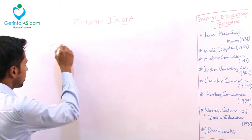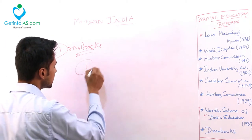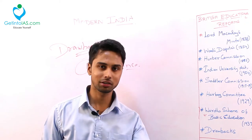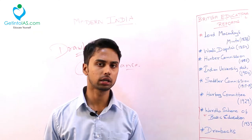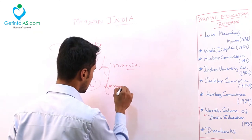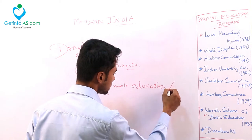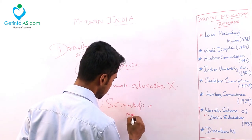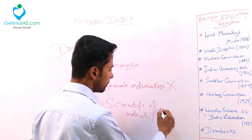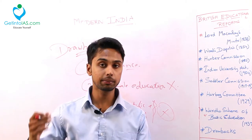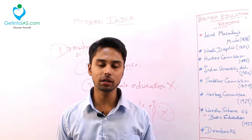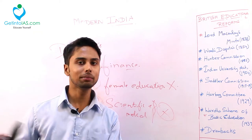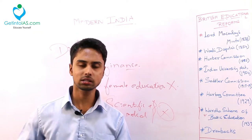There are many drawbacks of the British education reforms. First drawback is finance - not that much finance was channelized towards education reforms; in the budget, education got only a mere share. Second, female education was not that much promoted by the British. Third, scientific and medical education were not promoted much - only three medical colleges were set up during that entire time. Education didn't reach the rural masses or to the end corners, and most of the Indians were illiterate at that time.